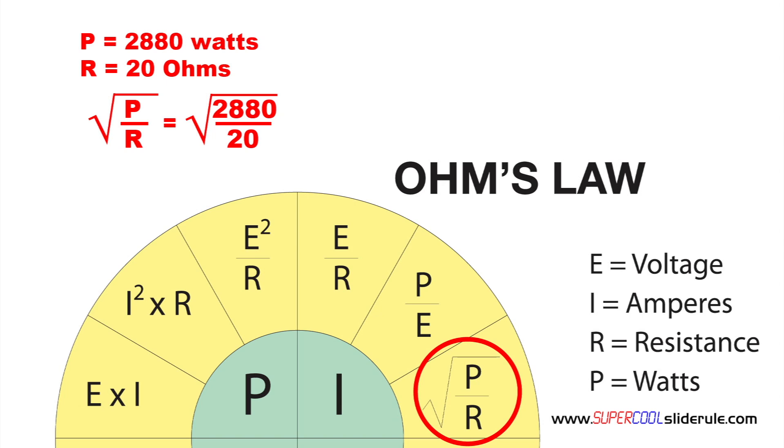This symbol here is called a radical. A radical means we must take the square root of the number inside. To obtain the square root, we must determine what number, when multiplied by itself, is equal to this number. But first, we must perform the operation inside.